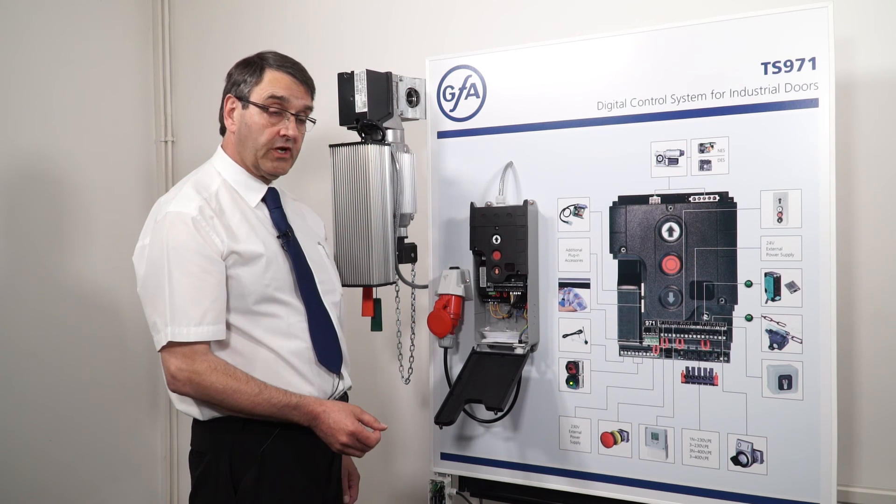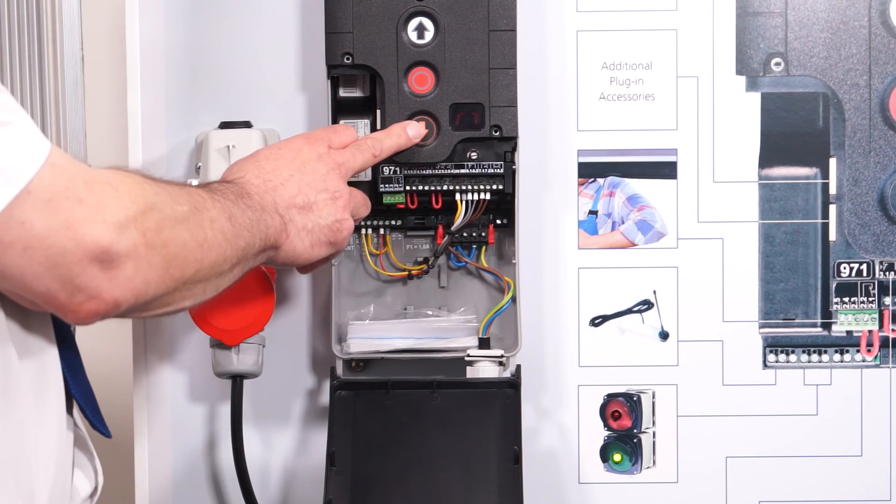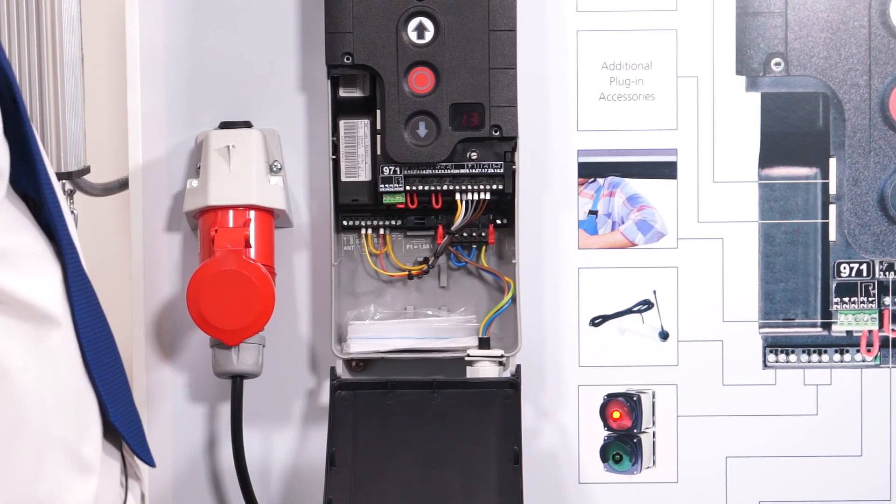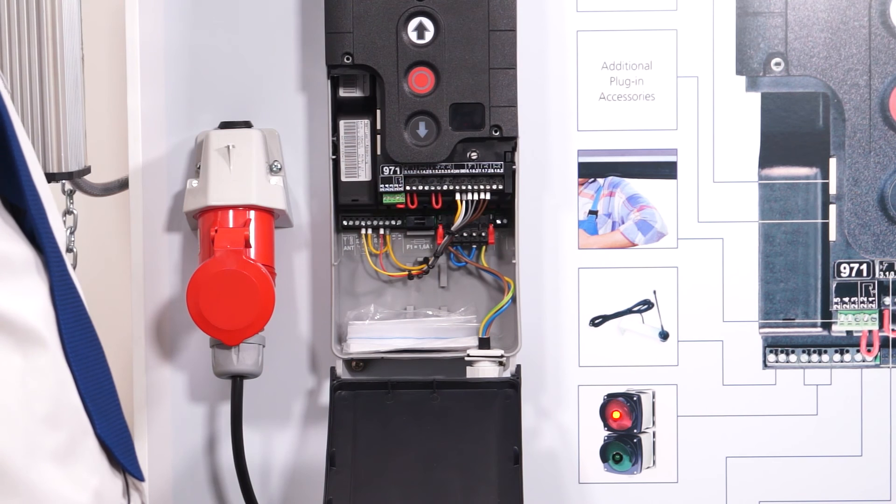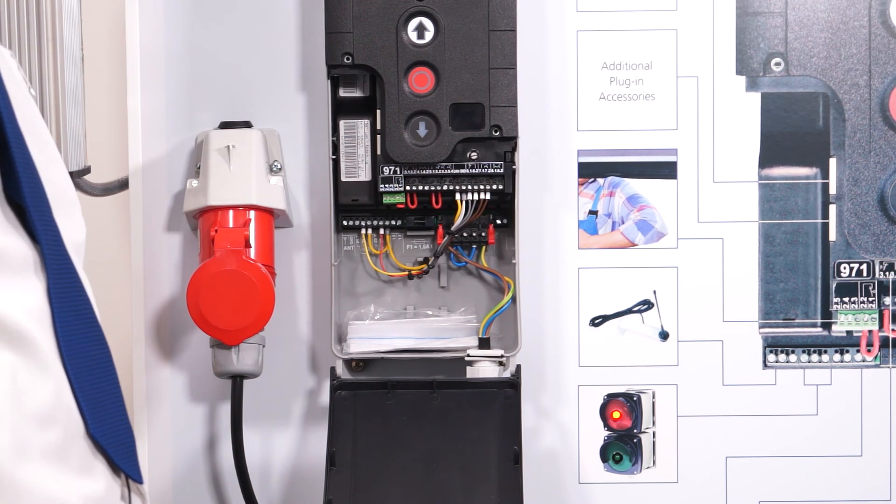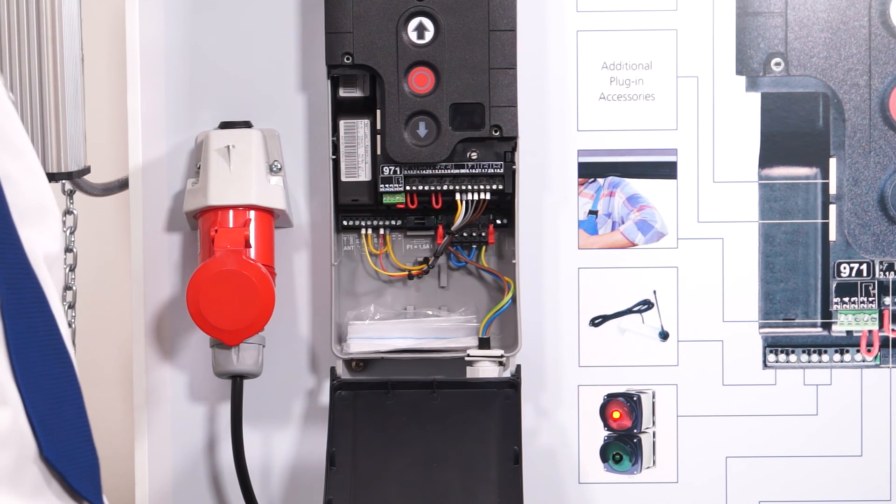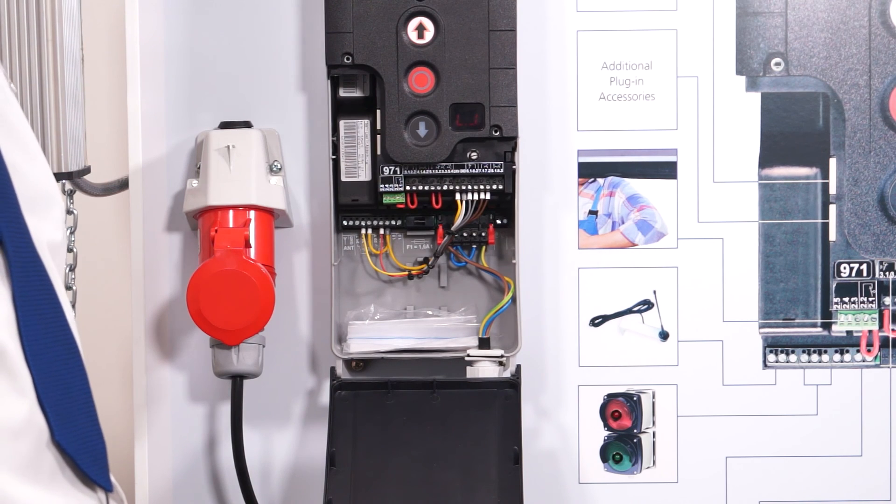When we signal the door to close we press the close button and this time the red light starts flashing for the pre-warning then comes on while the door is closing and when closed the red light goes out.